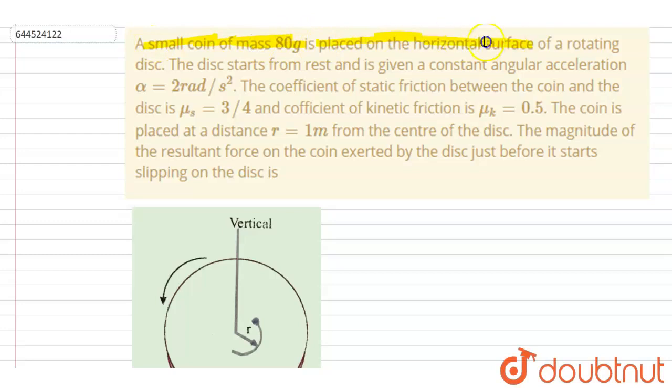mass 80 gram is placed on a horizontal surface of a rotating disc. The disc starts from rest and is moving with constant acceleration 2 radian per second.